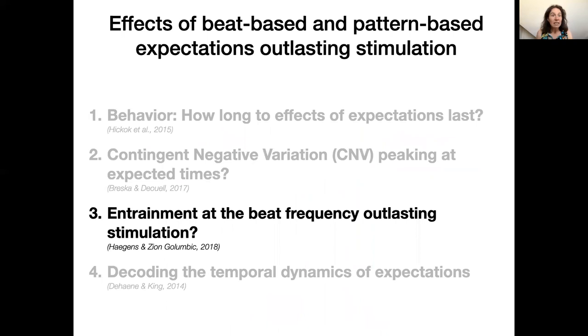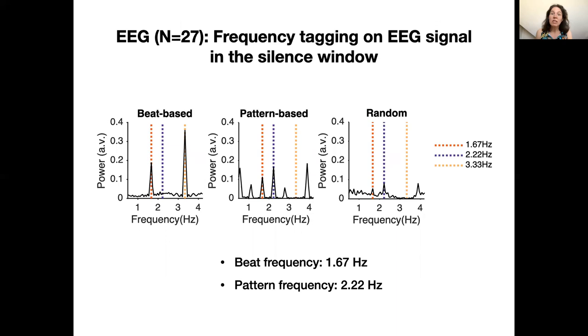In a second analysis, we looked at spectral power in the EEG signal at the frequencies most prevalent in the sound itself. So it's a frequency tagging analysis. These plots depict the frequencies present in the sound signal for each condition. In the beat-based condition, there are clear peaks at the frequency of the beat, which is 1.67 hertz, and its harmonics. For the pattern-based condition, the peaks are more distributed, and the highest peak is at 2.22 hertz. The prediction of entrainment theories is that we should see enhanced power at these frequencies even after the rhythm stops.